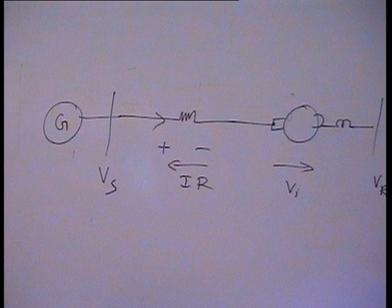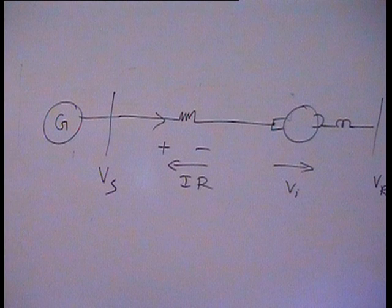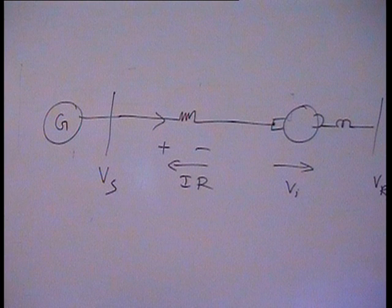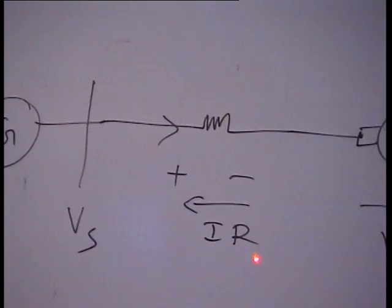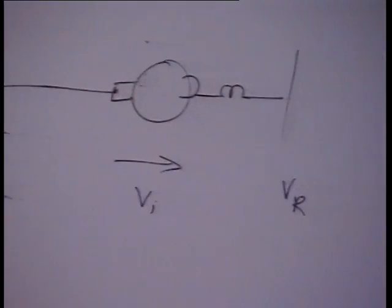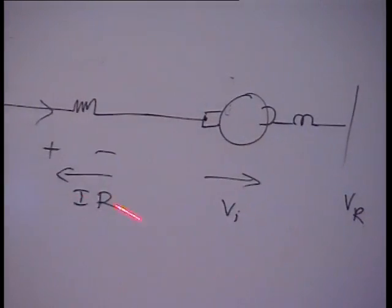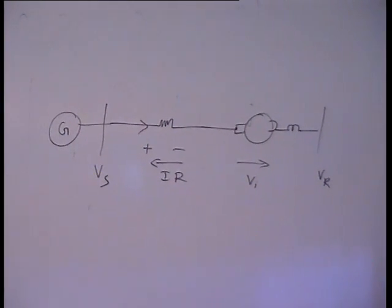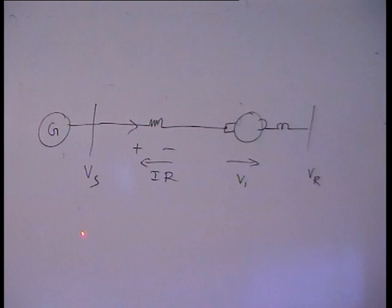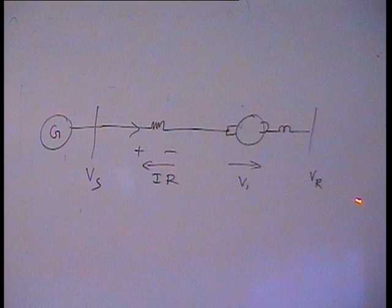About 40 years back we had DC transmission lines — when we had DC transmission lines in electric traction, we connected a small DC series generator in series with the line. The drop in the line resistance is IR; by injecting that voltage, these two cancel. If VS equals VR, the drop is zero and regulation is zero — ideally. Practically, regulation will be very low.